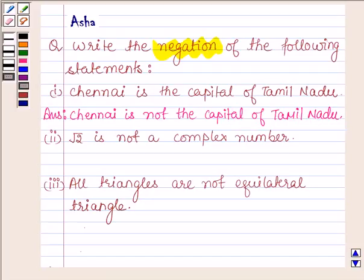Now let's proceed on to the second part. It says, root 2 is not a complex number. The negation of this statement will be, root 2 is a complex number. We have removed not from the statement.